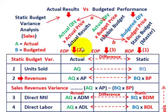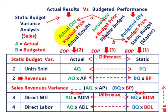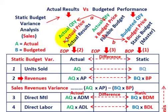At the end of the period we determine our actual results, which is our actual quantity times the actual price for each of the elements we're looking at. Actual quantity times actual price equals our actual results.